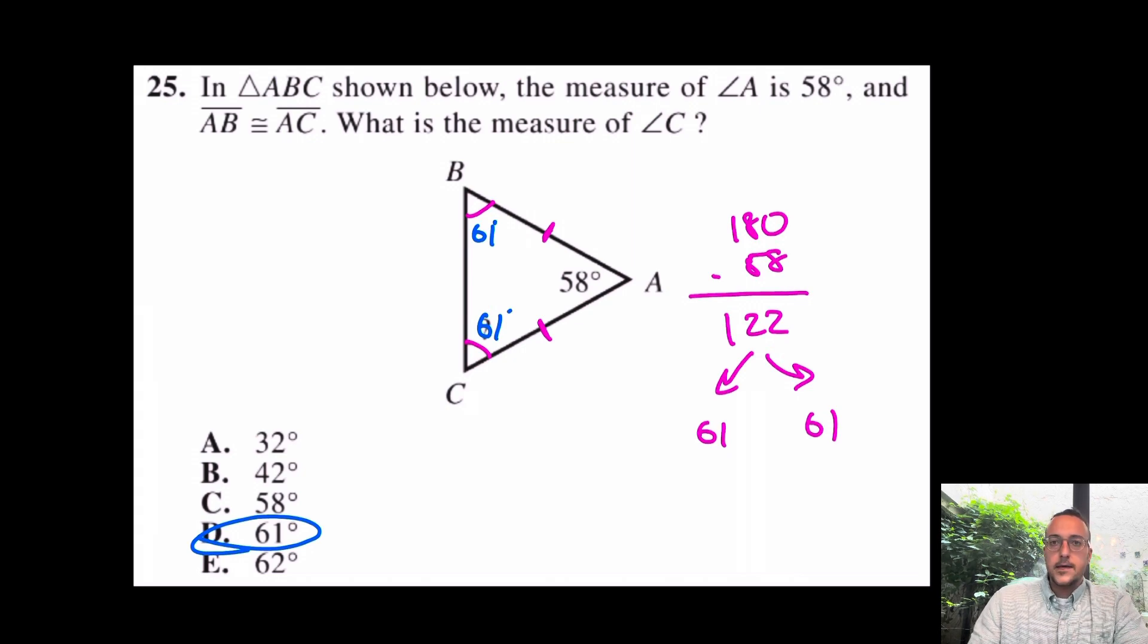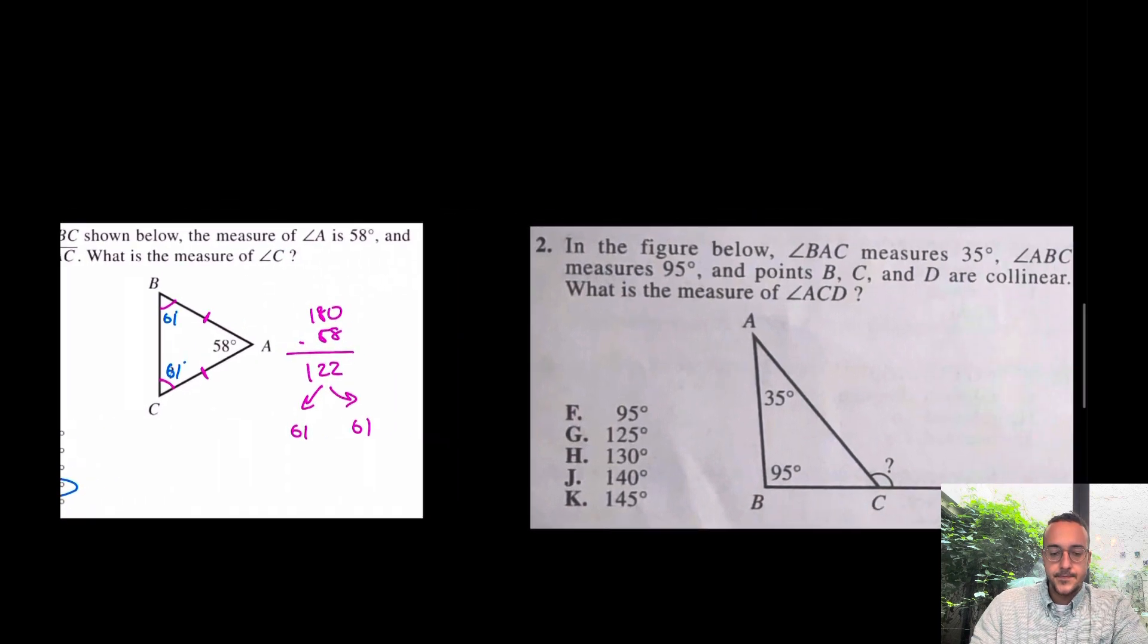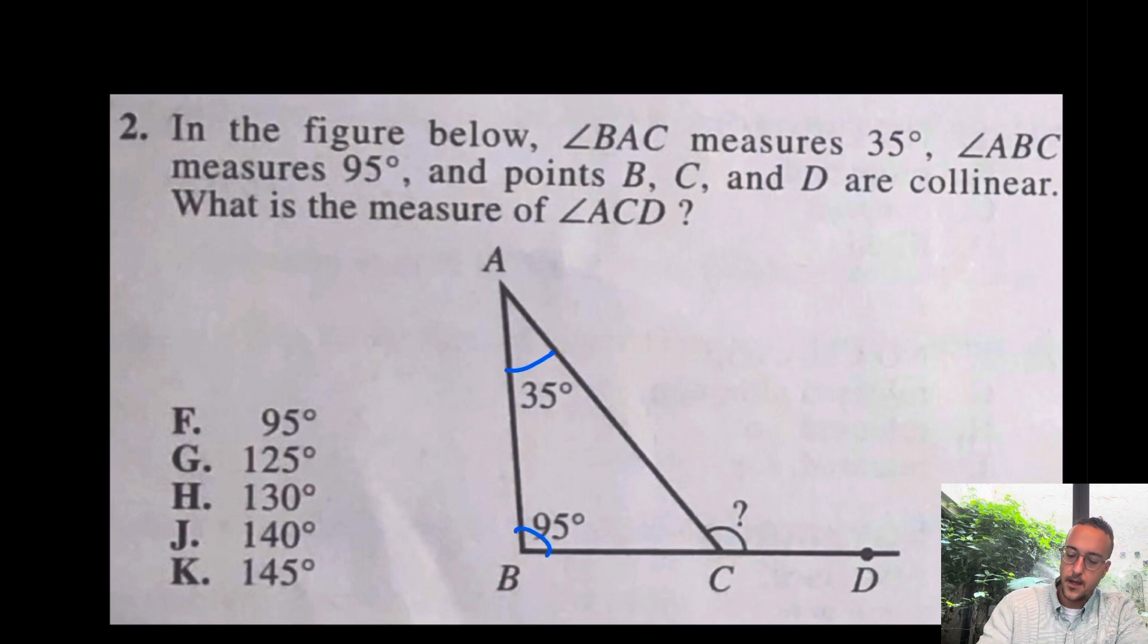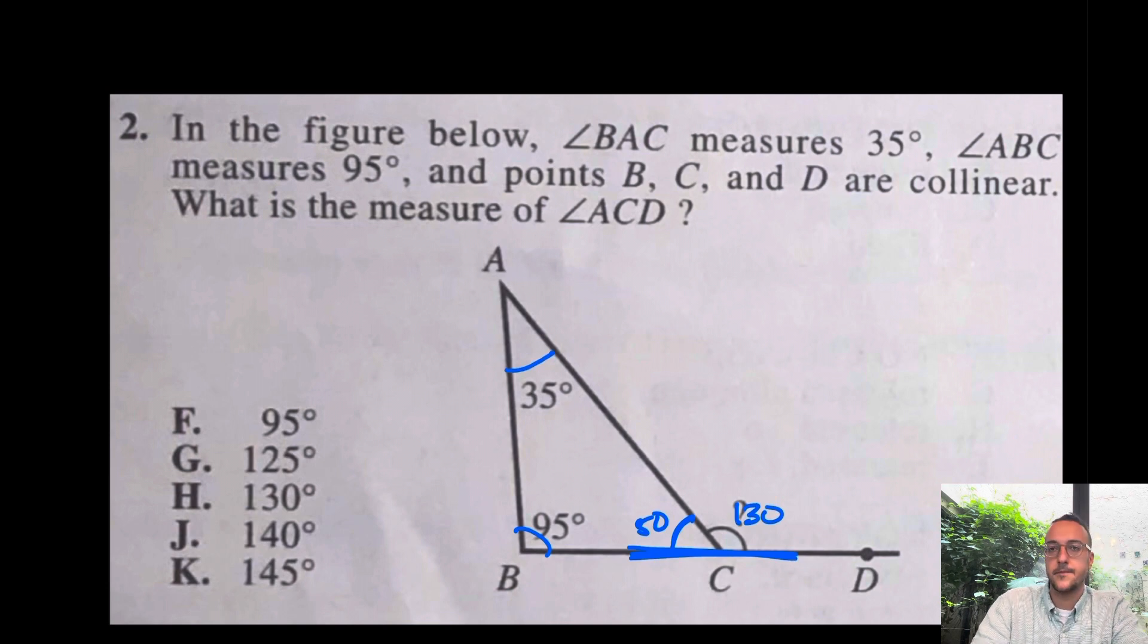All right, we're flying. These aren't too bad. Let's come over here for this question. This is just a number two from an ACT. This shouldn't be too bad. 35 and 95 add up to 140. Actually, 130. Oops. 130. If those add up to 130, then what's going to be left here in this triangle? Of course, 50. If that's 50, what's left on this straight line? That's going to be 130. That's it. My answer is H.